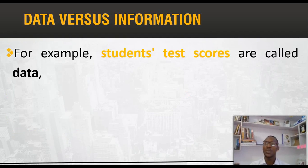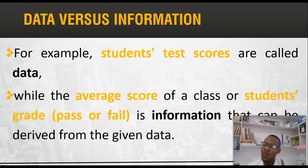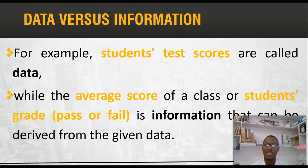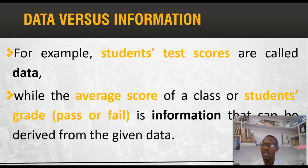For example, in a class where we carry out a test — maybe we give a computer test to a class — the individual student scores can be categorized as data. Whereas if we want to calculate the average score of the entire class to know the number of those that passed and those that failed, that result can be known as information. To calculate the number of students that passed and those that failed was achieved with the aid of the data, which is the raw scores of those students. When we process given data to derive useful information, that is what we call the information processing cycle.